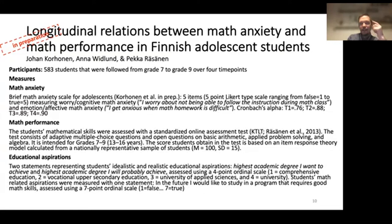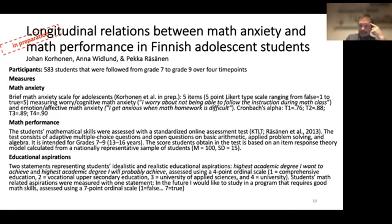The scale combines both worry and emotional dimensions rather than separating them — it is really short at only five items. We also had a standardized Finnish math performance test. In addition, we asked about students' educational aspirations: both the highest academic degree they would ideally like to achieve and a more realistic aspiration, as well as specifically whether they would choose a study program requiring good math skills.